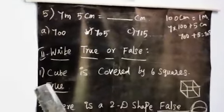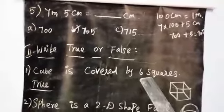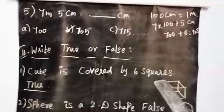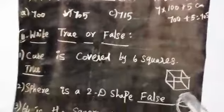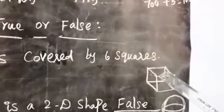Part four - write true or false. First statement: a cube is covered by six squares. Now look at this cube shape.